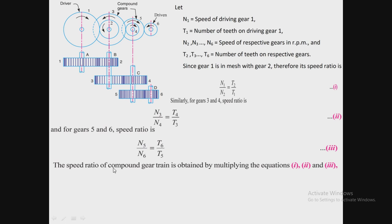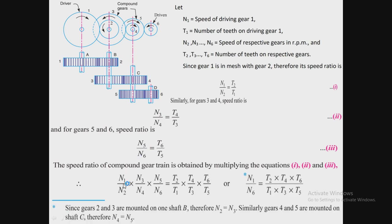Now we are going to find the final velocity ratio for this compound gear train by multiplying equations 1, 2, and 3. After multiplication we get: (N1/N2) × (N3/N4) × (N5/N6) = (T2/T1) × (T4/T3) × (T6/T5). This equation may be written as N1/N6 = (T2 × T4 × T6) / (T1 × T3 × T5).